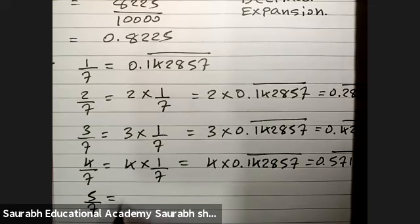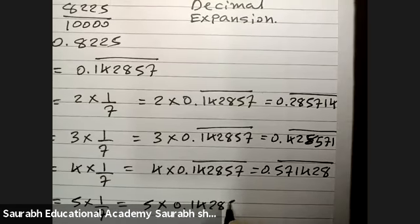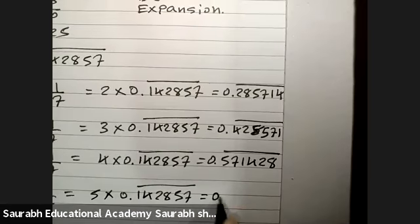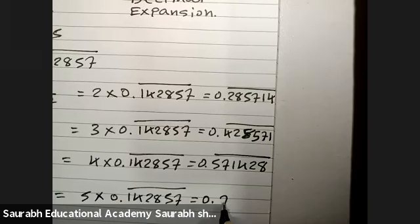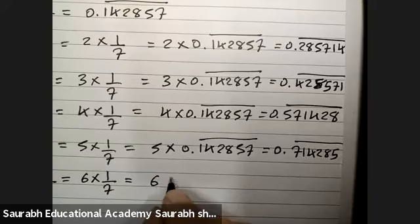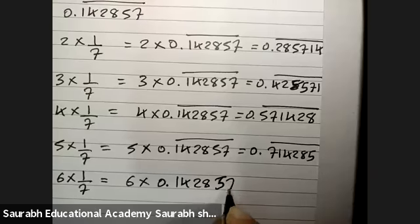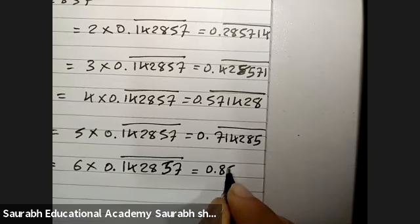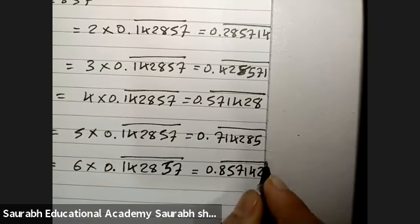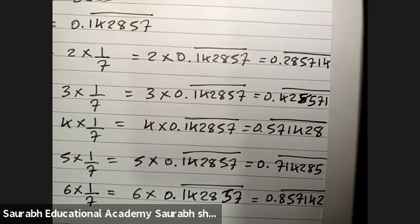For 5/7: 5 × (1/7) = 5 × 0.142857 = 0.714285 repeating. For 6/7: 6 × (1/7) = 6 × 0.142857 = 0.857142 repeating. So this is just one number cycle, and we can find out all the repeating decimals from there.